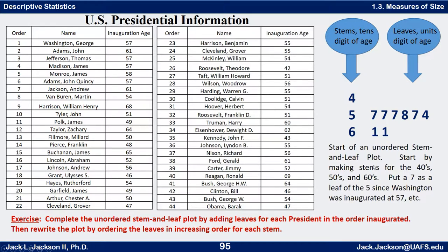I'd like you to go ahead and complete this completely — one line per stem — and this will be unordered as you go through it. Then after you finish it, reorder it. If this were the whole thing I'd put the four, then the sevens, then the eight in order: so four, seven, seven, seven, seven — four fours and then an eight. See if you can finish out an ordered stem and leaf plot for this data. Press pause now.